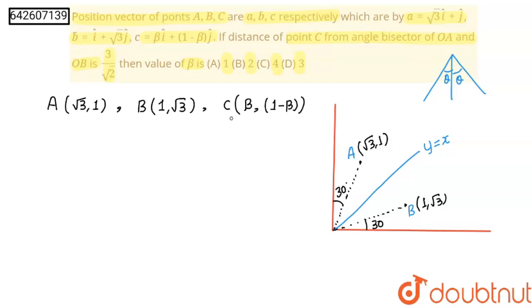Okay, now, distance of point C from angle bisector, angle bisector is y = x is 3 upon root 2. So, let's write equation of angle bisector y - x = 0.